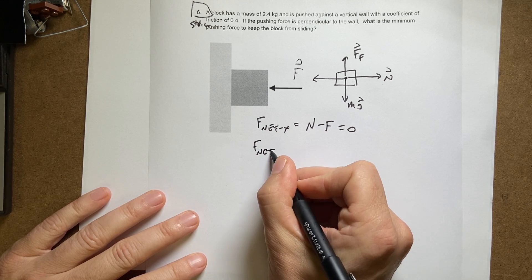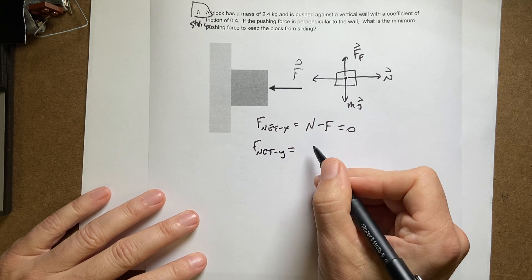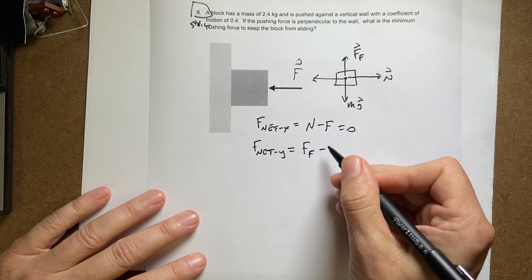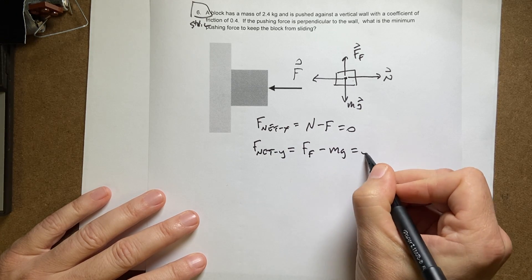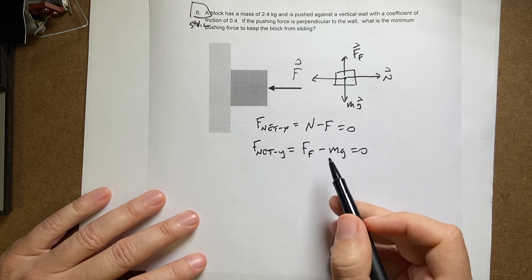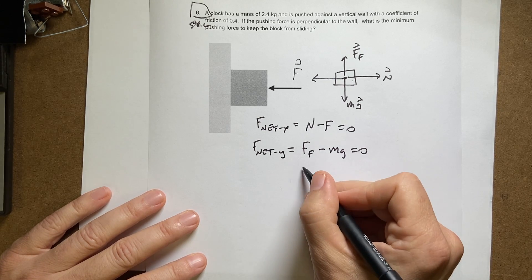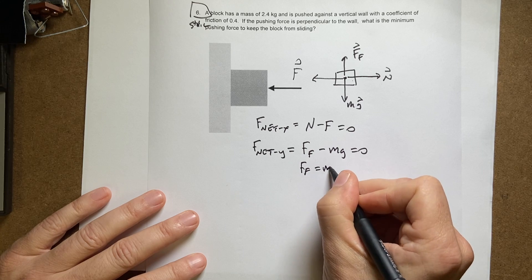F net Y is going to be equal to F friction minus Mg equals 0. So I can solve this for the frictional force. F friction equals Mg.